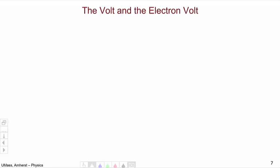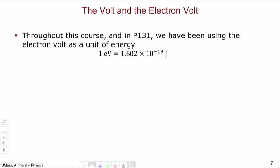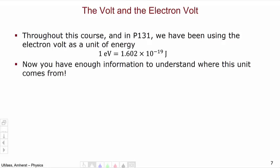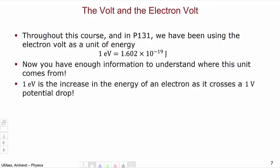One last point to discuss is the connection between the volt and the electron volt. You may have already started to see this connection in the last problem. Throughout this course and in Physics 131, we've been using the electron volt as a unit of energy, using it as a straight conversion factor: 1 eV = 1.602 × 10⁻¹⁹ joules. Now, however, you have enough information to understand where this unit of energy comes from. 1 eV is the increase in energy of an electron as it goes across a 1-volt potential drop.